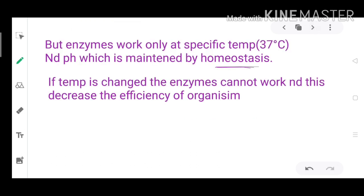Enzymes help in increasing the speed of metabolic reactions. But the enzymes work only at specific temperature and pH, which is called optimum temperature and optimum pH of the enzyme. This optimum temperature and pH is maintained by the homeostasis process. If the temperature is changed, the enzyme cannot work, and this decreases the efficiency of organism.